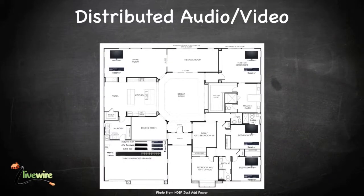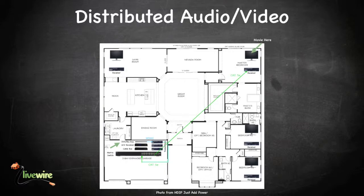Going back to the question asked at the beginning of the video: how would someone watch a movie from the bedroom when the Blu-ray player is in the rack downstairs? Now you know. The signal from the Blu-ray player travels to the transmitter with an HDMI cable, then through a Cat5e, 6, or 7 cable to the matrix switch. From there, it travels through the Cat5e, 6, or 7 cable run through the walls to the bedroom, where it connects to a receiver, and the receiver is connected to the TV. That is how Distributed Audio Video works.